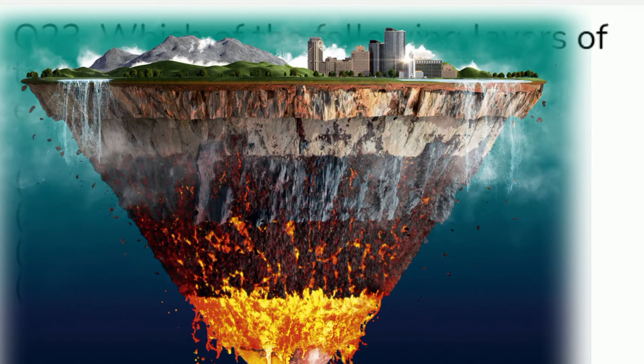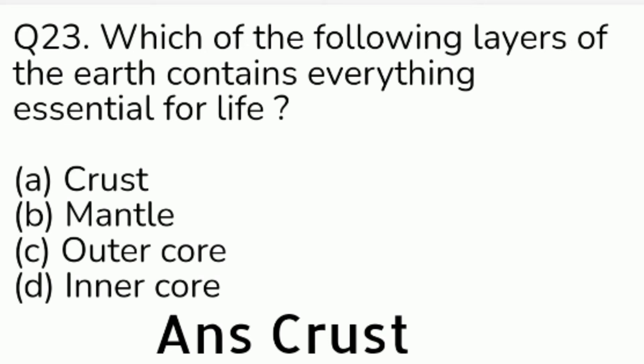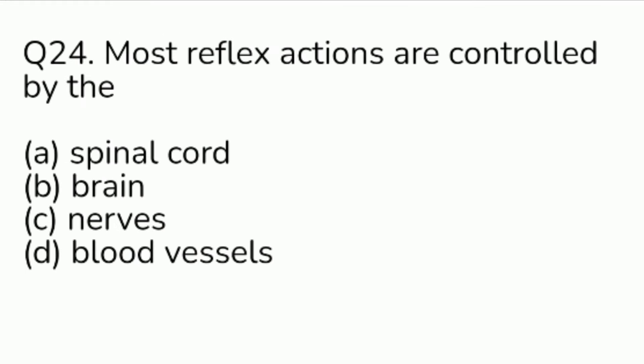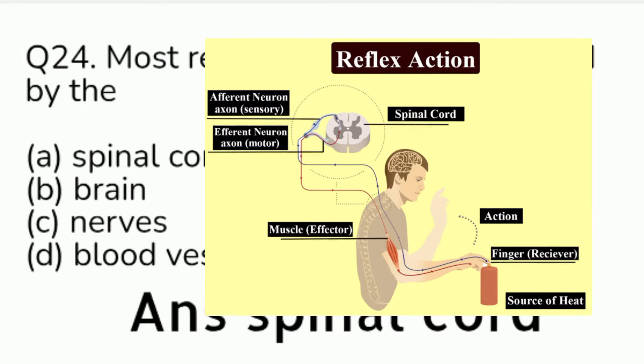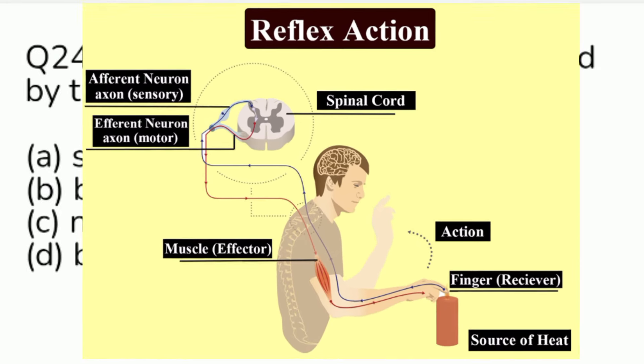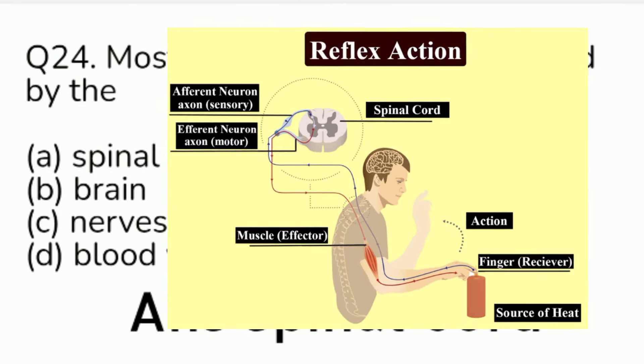Question number 24. Most reflex actions are controlled by the — Option A: spinal cord. Option B: brain. Option C: nerves. Option D: blood vessels. Answer is Option A, spinal cord.